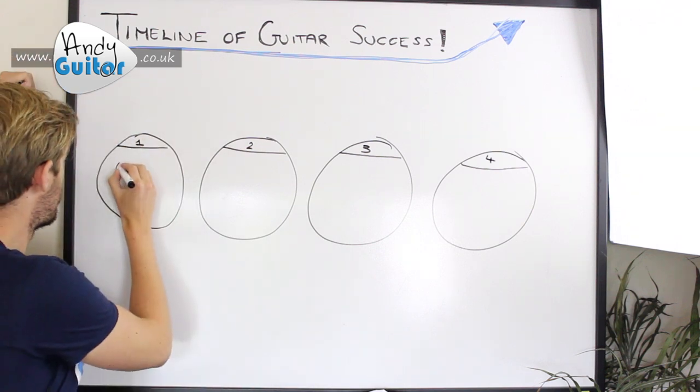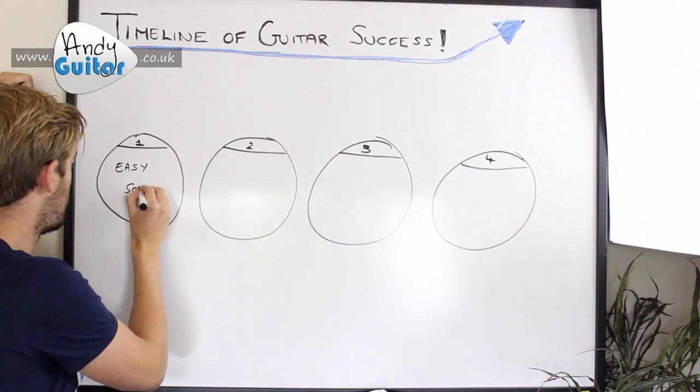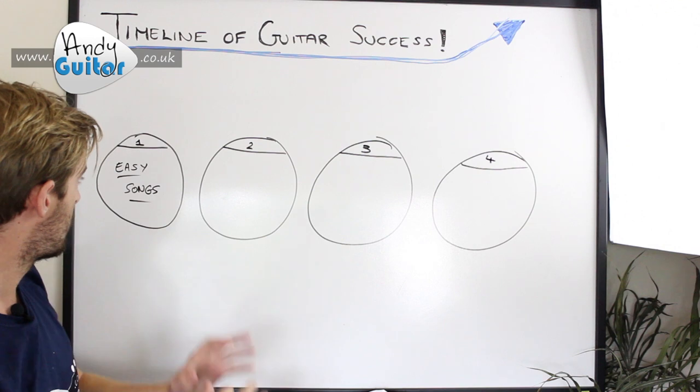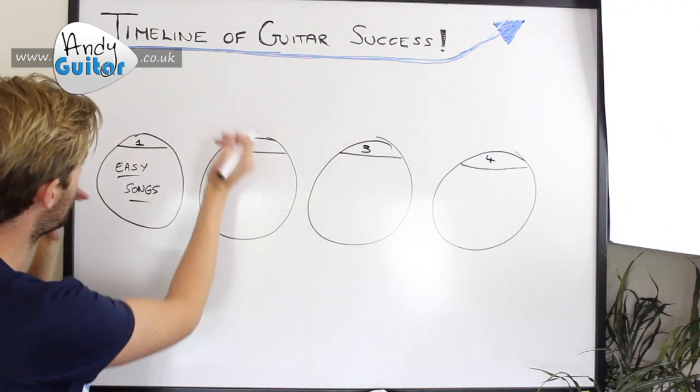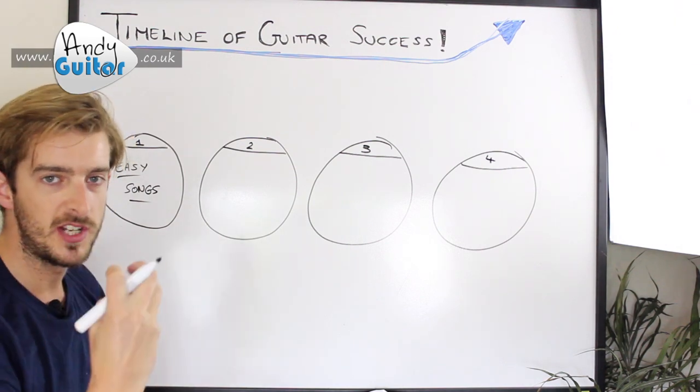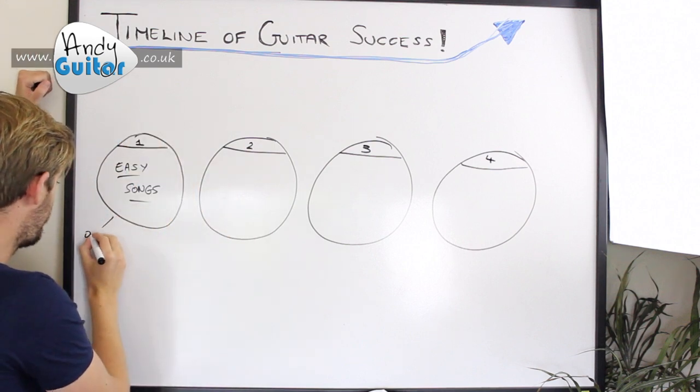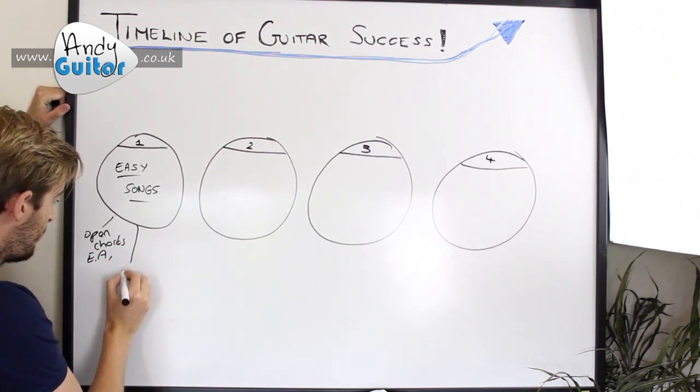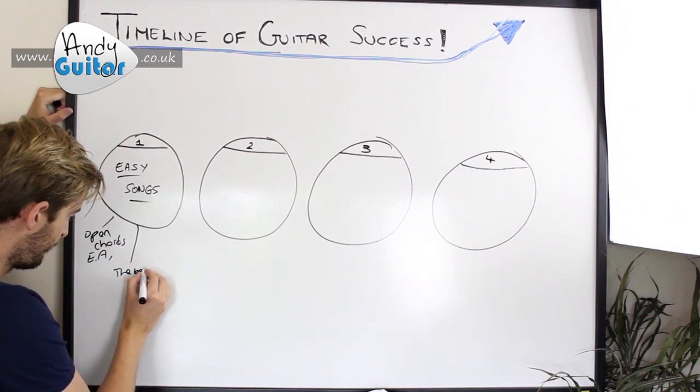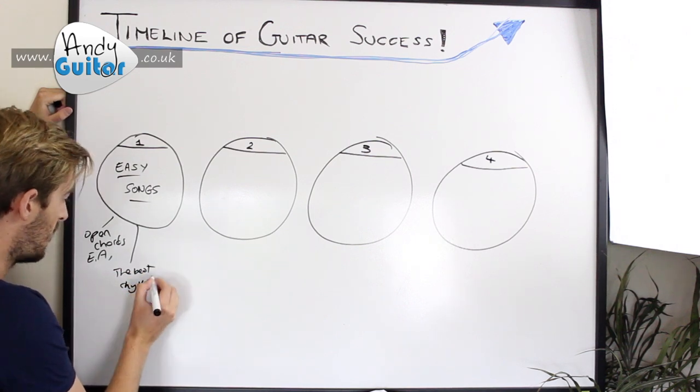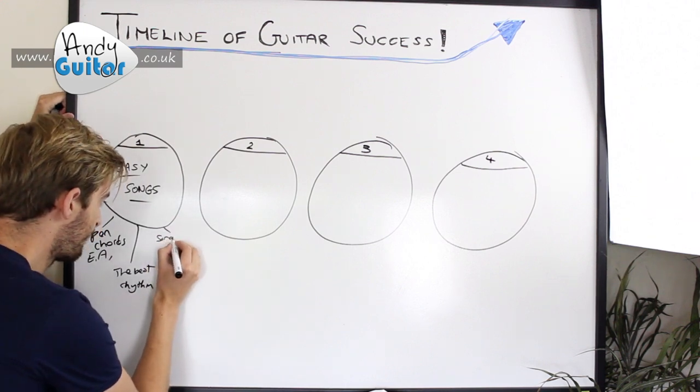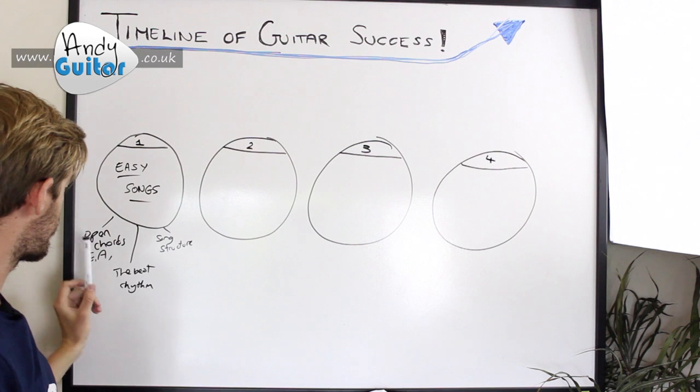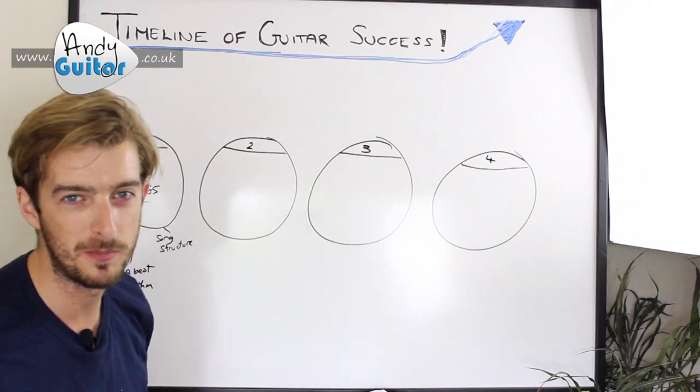The first stage that you're aiming to achieve is not rocket science, it's to learn some easy songs. The reason I'm making this the first stage is because there are different ingredients and things that you need to learn to make sure that you achieve learning some easy songs. Those things are open chords, I start off with E and A in my beginners course, rhythm and strumming on the beat, so the beat but also the basics of rhythm and strumming. And also, crucially, song structure. So without song structure you have the components of a song but you can't actually put them into a song or play something all the way through.